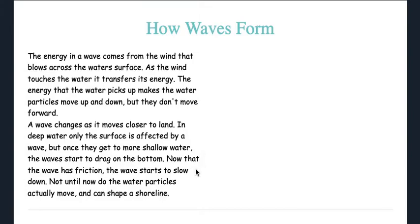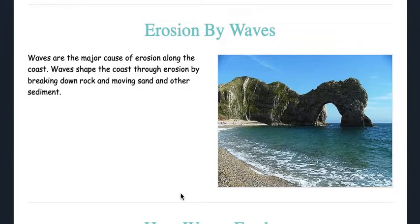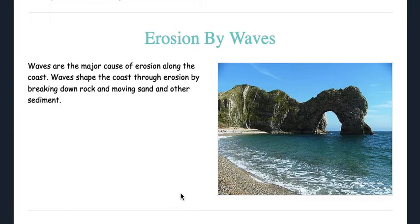Now that the wave has friction, the wave starts to slow down. Not until now do the water particles actually move and can shape the shoreline. Waves are a major cause of erosion along the coast. Waves shape the coast through erosion by breaking down rock and moving sand and other sediment.